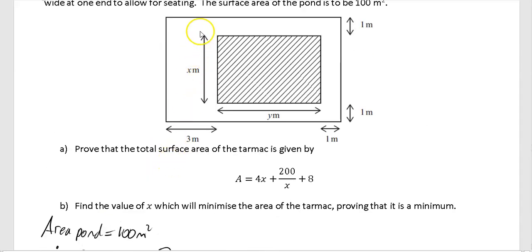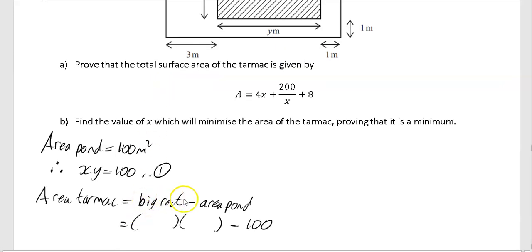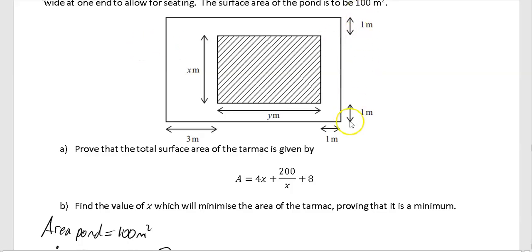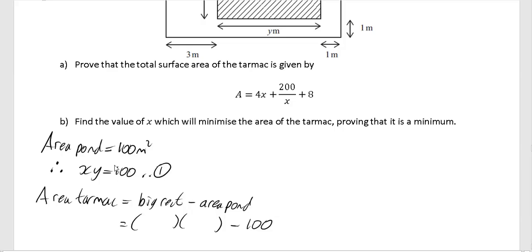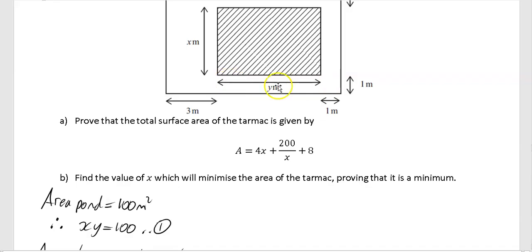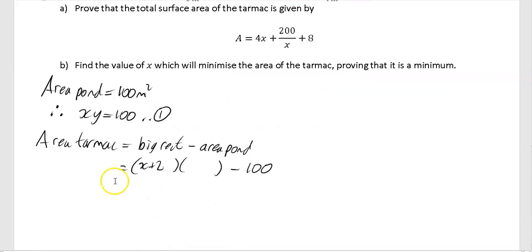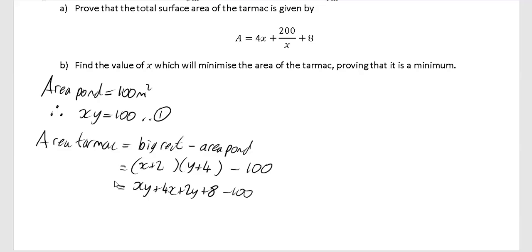The area of the tarmac is the big rectangle minus the area of the pond. Looking at the vertical height: x plus 1 plus 1 gives x plus 2. The horizontal: y plus 1 plus 3 gives y plus 4. Expanding (x+2)(y+4): xy plus 4x plus 2y plus 8, minus 100. Tidying up gives xy plus 4x plus 2y minus 92 — equation 2.